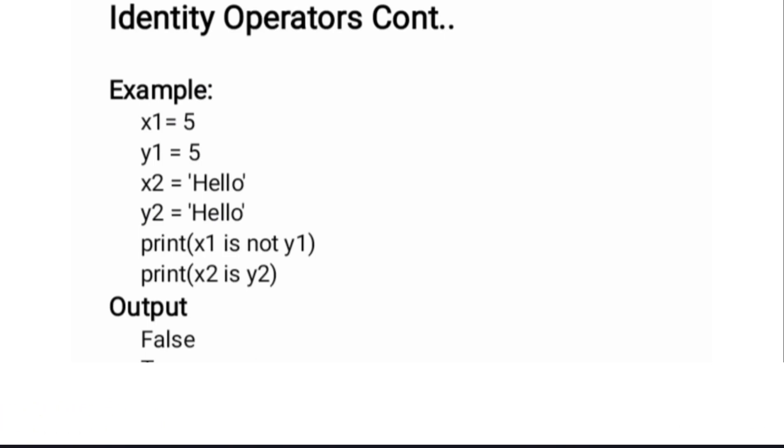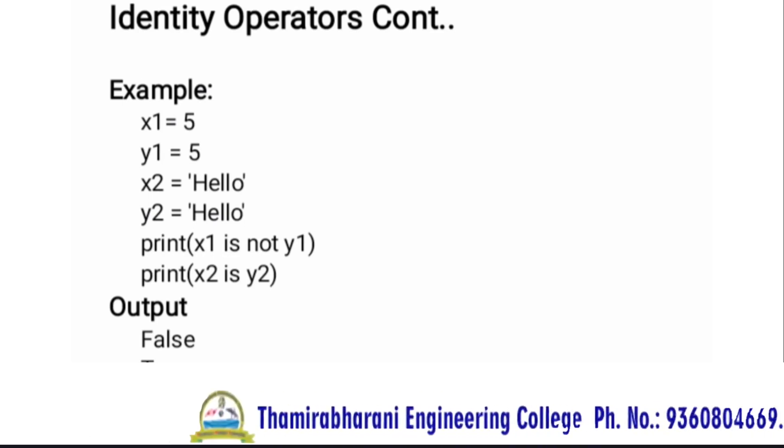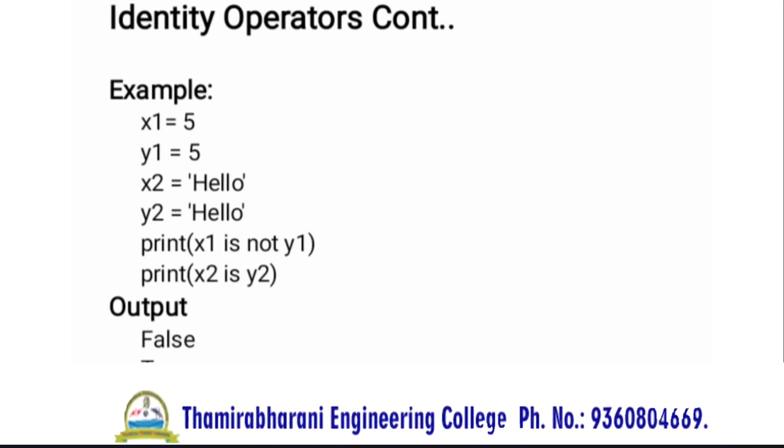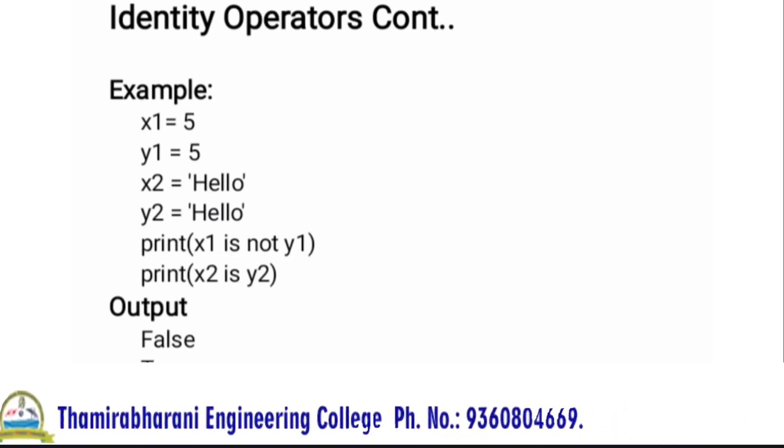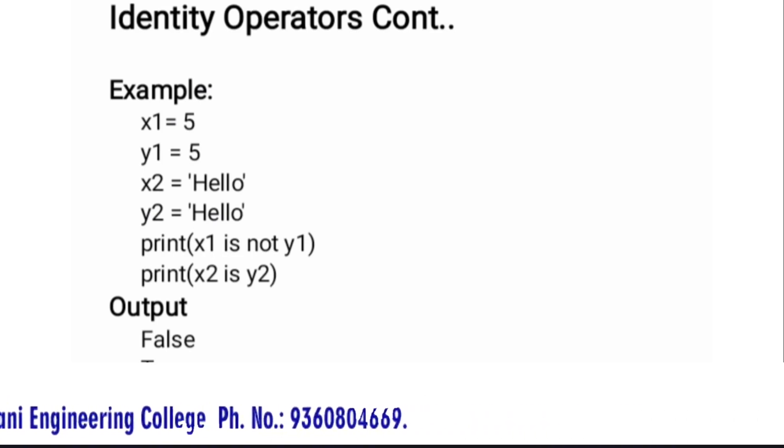Example program for identity operators: x1 variable is assigned value 5. Next, the same value 5 is assigned to y1. Next, x2 variable is assigned the string 'Hello'. Next, that same string is assigned to y2 variable. Now let's check.